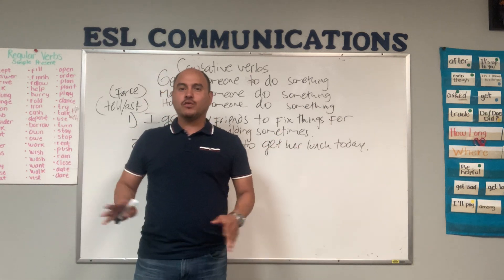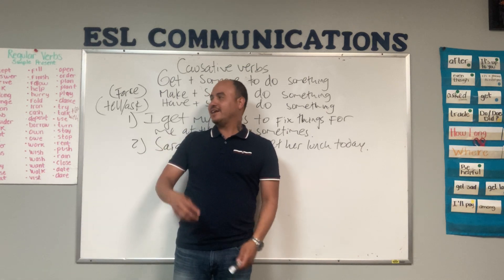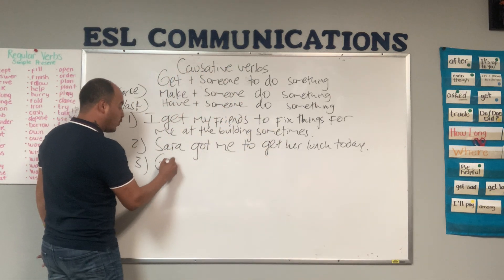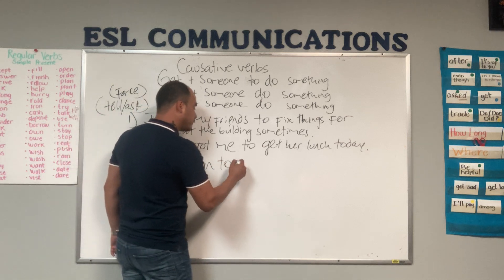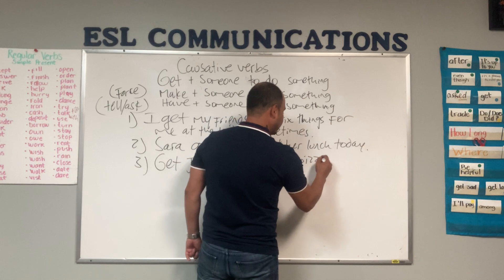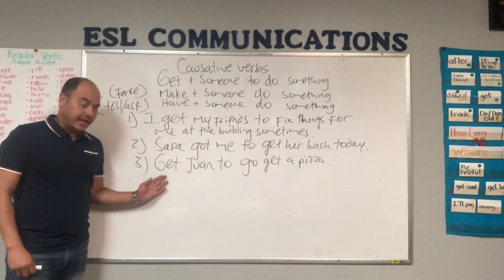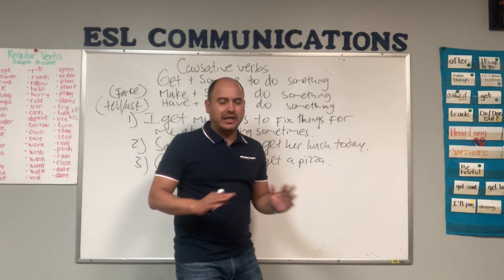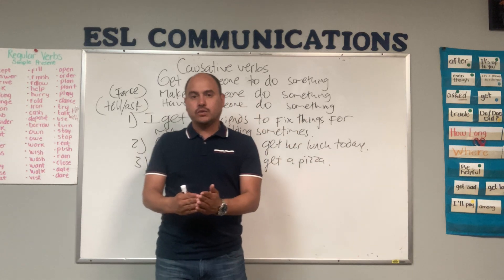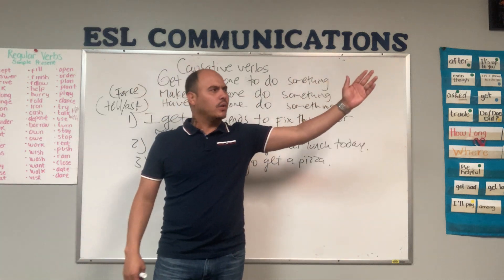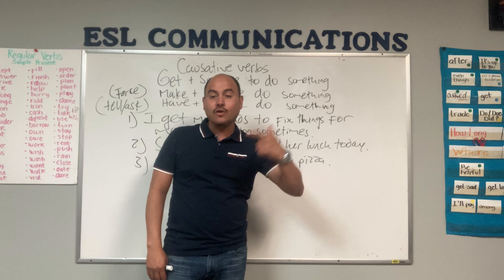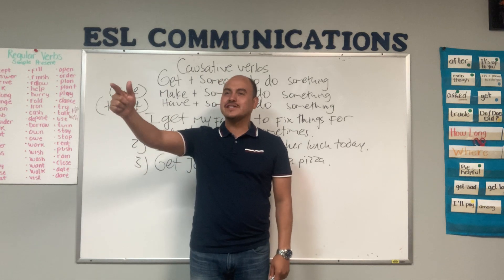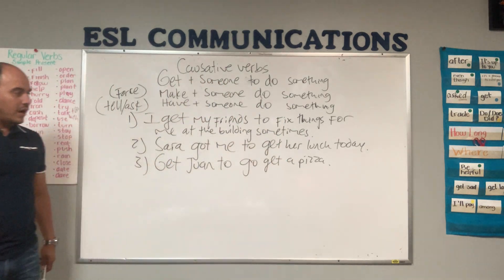Imagine if we're working here — dile a Juan que vaya por una pizza. Get Juan to go get a pizza. Lo que estás haciendo — convéncelo. En español casi siempre se quiere decir dile a Juan, pero aquí es más como convéncelo que vaya. Get Juan to go get a pizza.